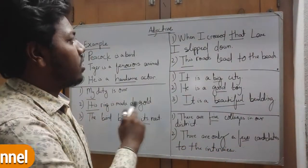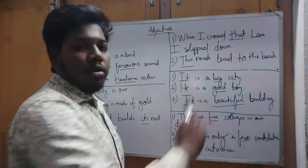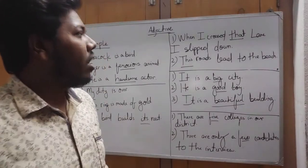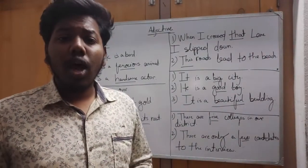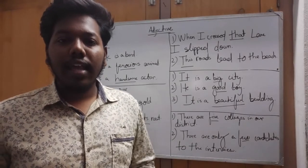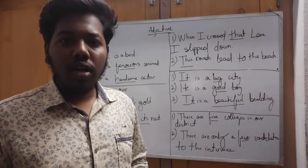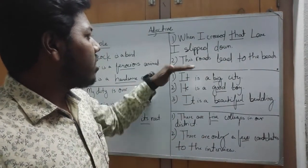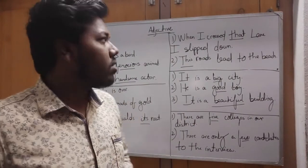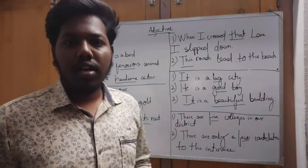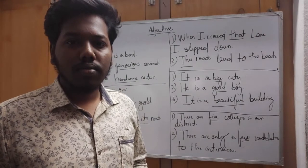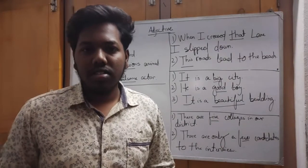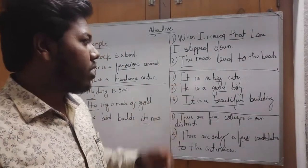Next, it comes demonstrative adjective. Demonstrative adjective means which is used as a possessive adjective or in a demonstrative pronoun, that is used as a pronoun. This and that are used as demonstrative adjective. When I cross that lane, I slip down. This road leads to the beach, giving directions, giving way. That is used as a demonstrative adjective.